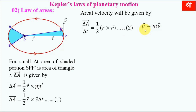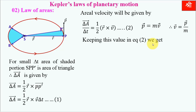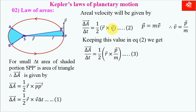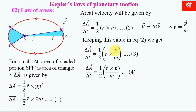We know momentum is the product of mass into velocity, therefore velocity equals momentum upon mass. Substituting this into the equation, we get delta A upon delta T equal to half of vector R cross vector P upon M, where vector P is the momentum vector. Angular momentum is defined as vector L equals vector R cross vector P.